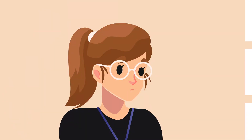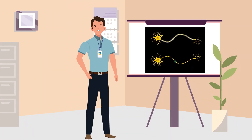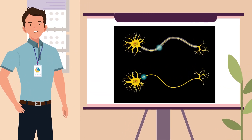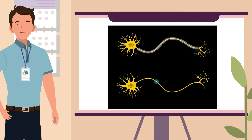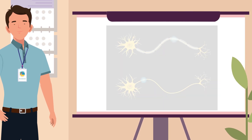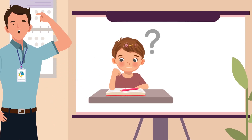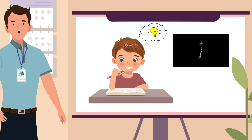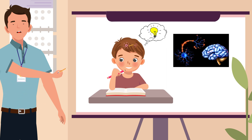Why is myelin important? Myelin is important because it protects the axons and allows an impulse to travel very fast along a nerve fibre, thereby getting information from one nerve cell to another. Let's say you have an idea in your head to move your right hand and pick up a pencil — that idea travels as an electrical impulse through fibres from your brain, through your spinal cord, hopping from neuron to neuron along the way, out to the peripheral nerves in your right arm, and finally to your right hand where motion occurs.